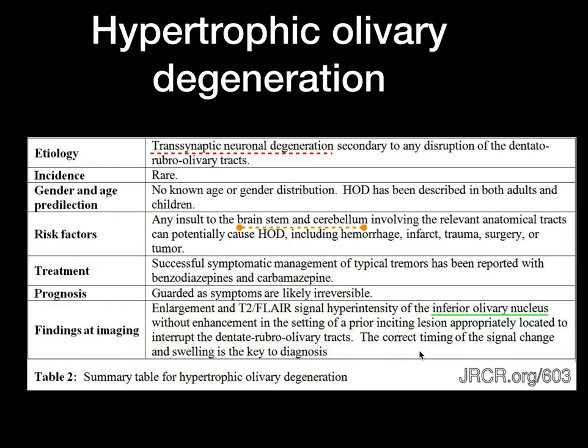It is nothing but a transsynaptic neuronal degeneration. Any insult in the brainstem and cerebellum involving the anatomical tracts can cause this hypertrophic olivary degeneration over a period of time. The cause could be hemorrhage, infarct, trauma, surgery, or a lesion like a tumor.